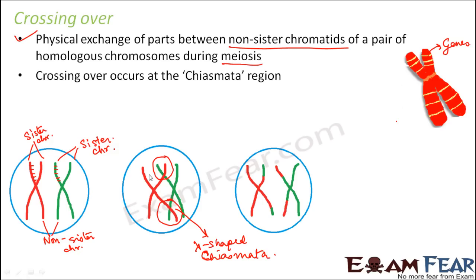Once the exchange is done, they again get separated, but some of the part got exchanged. This part also contains the gene. When this exchange takes place, the genes which were present on the chromosome also got exchanged. When you have different genes being exchanged, there will be some blending of the genes as well. Because of this crossing over, the recombinations take place.